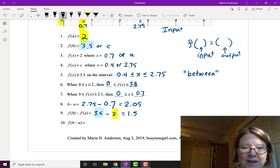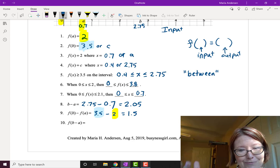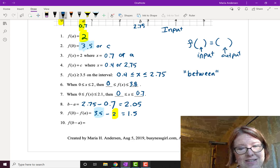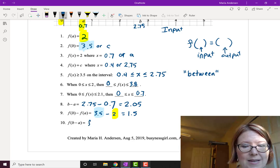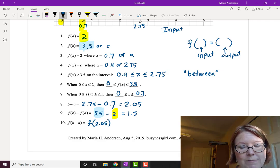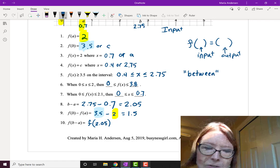Now what if you have f of b minus a, where b minus a is in the parentheses? Well, we usually do parentheses first if there is an expression that's evaluatable in the parentheses. So here I'm going to say, well, b minus a is the same thing as 2.05. So really what I'm doing when I want to find f of b minus a is finding f of 2.05.